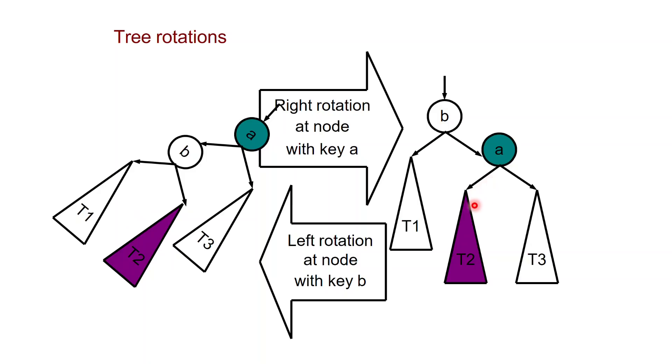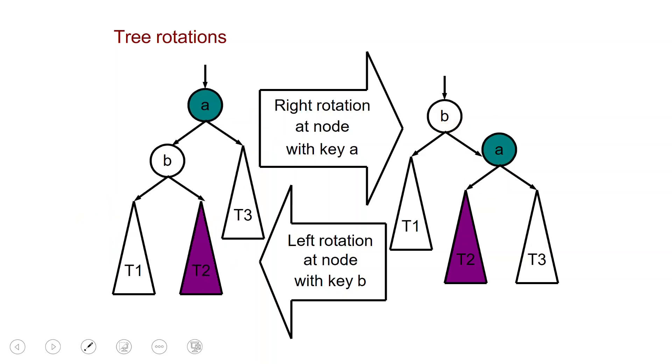And a left rotation at node B is just a symmetric operation. So you have to visualize now that B goes counterclockwise to the left. A goes above and A is going to give its left child to B which will take it as right child in this fashion, and you go back to this tree here.